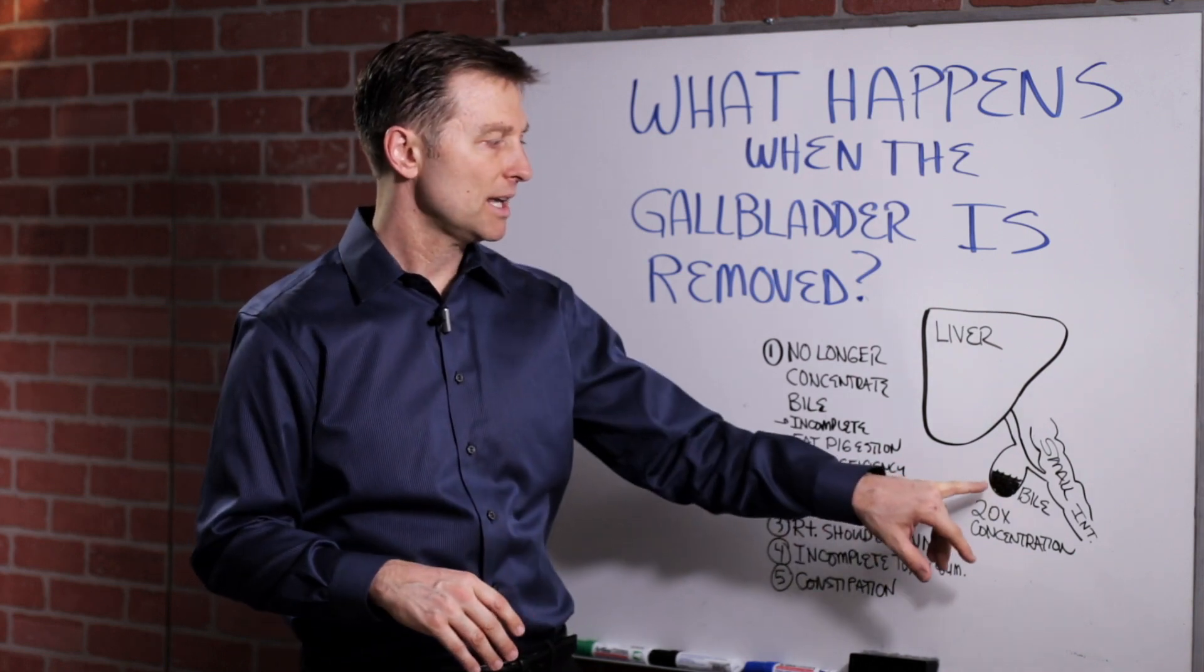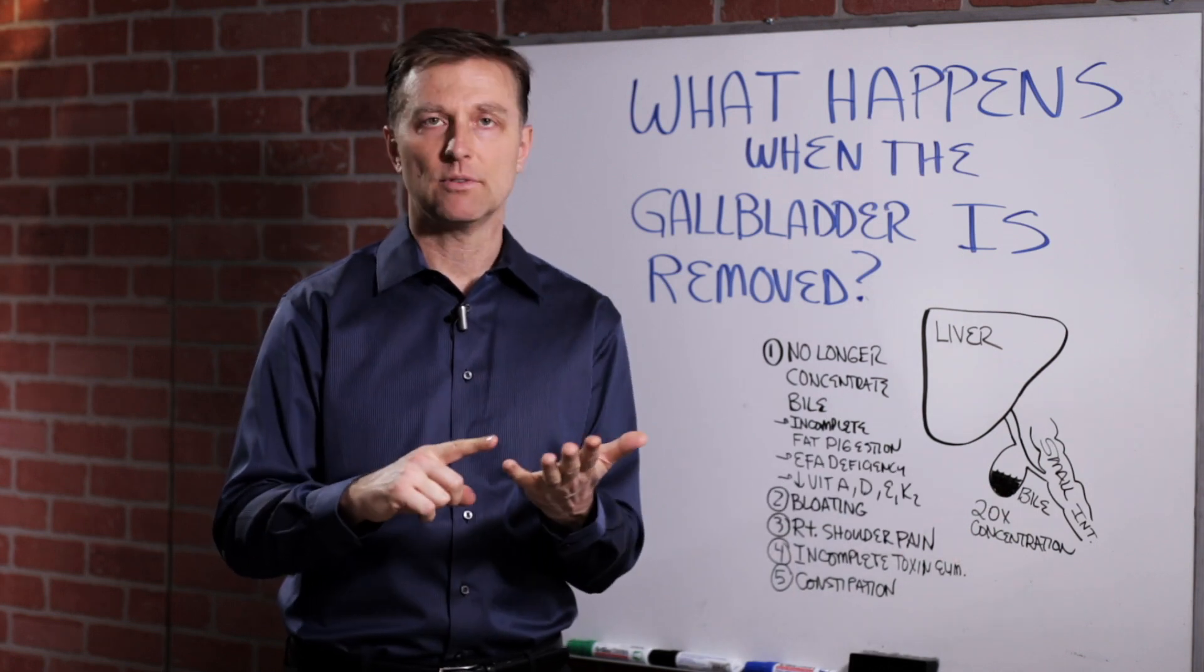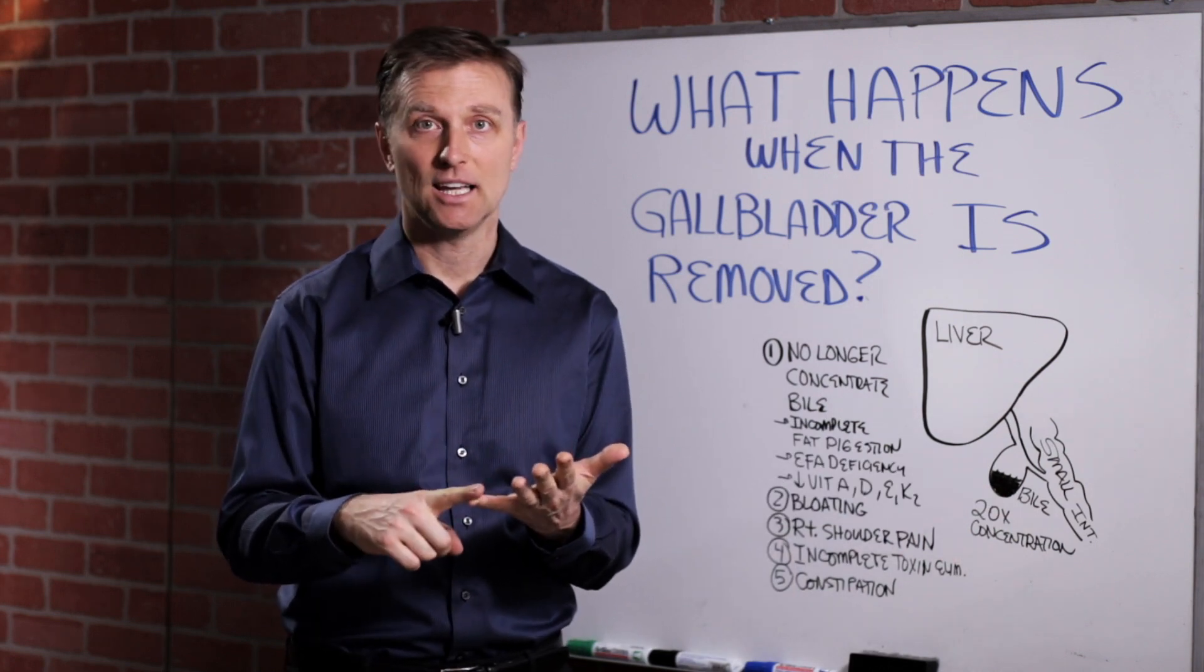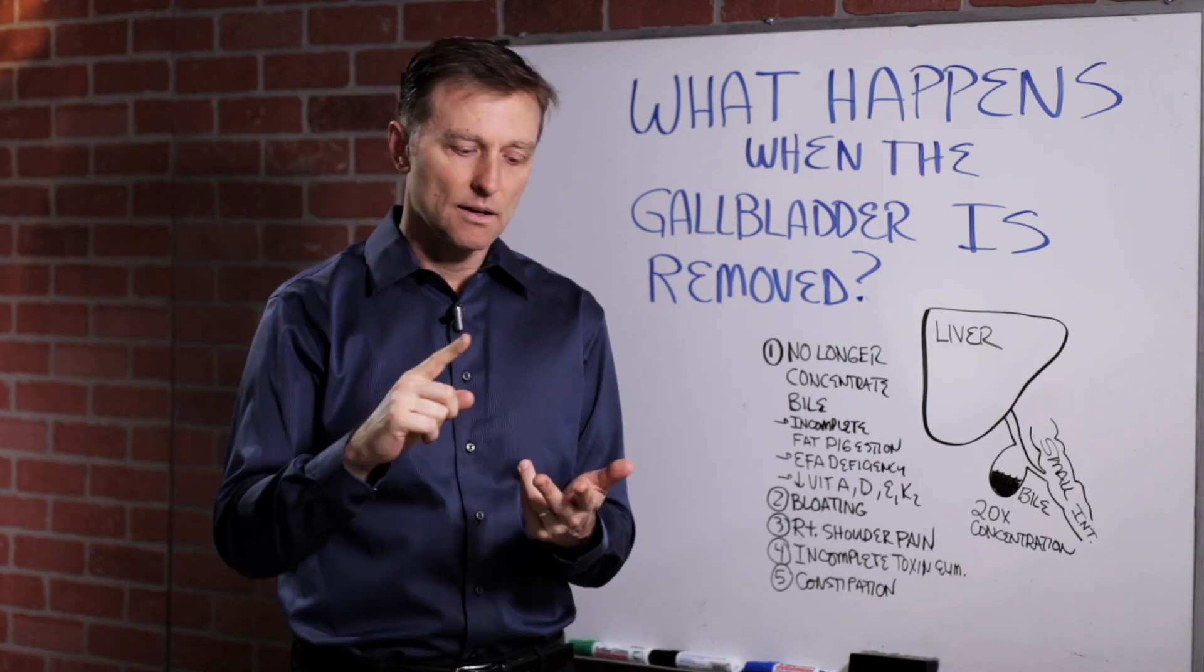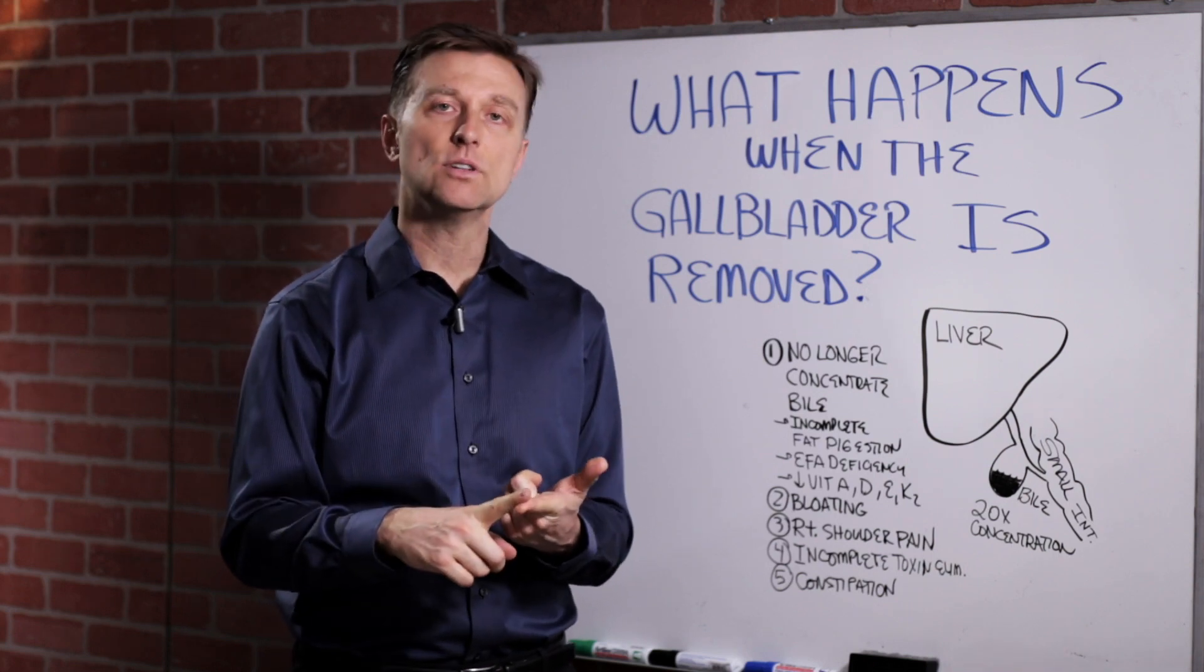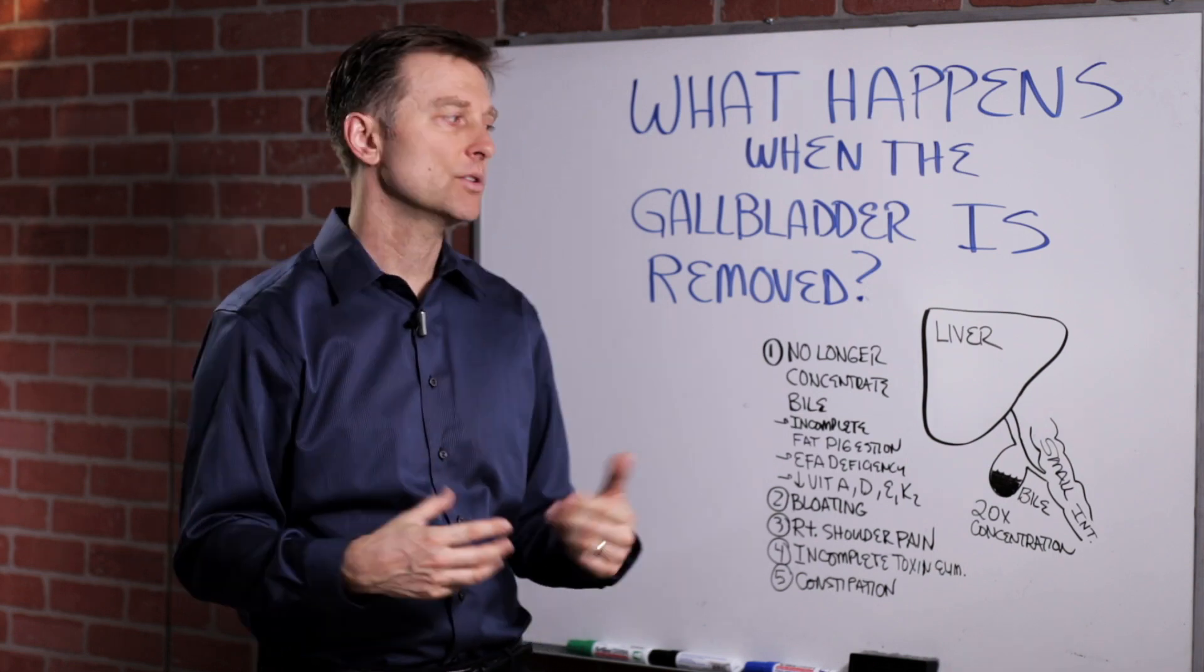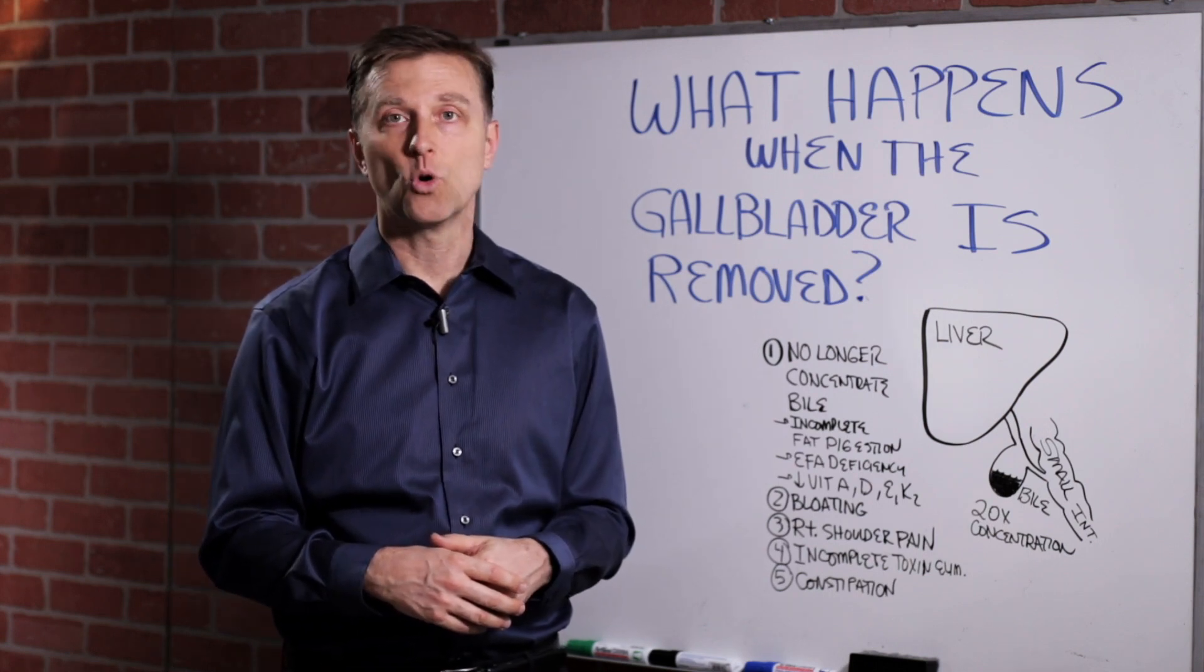So the purpose of bile is to help you break down fats and help you absorb fat-soluble vitamins. Vitamin A to prevent night blindness and skin problems. Vitamin E for the heart. Vitamin D for bone and bone pain. Vitamin K2 to prevent calcium from building up in the arteries. So all those fat-soluble vitamins are very important to be able to absorb and digest.